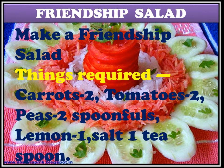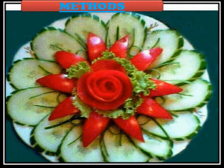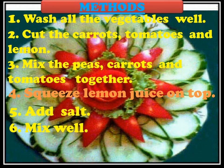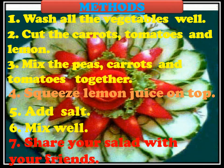So dear children, we have come to the activity. This is also part of your creative writing, and here we are going to do the activity: Make a Friendship Salad. Things required to make friendship salad are: carrots, two tomatoes, two peas — two spoonfuls, lemon — one, and salt — one teaspoon. Now see how we can prepare it and what the steps of the method are.